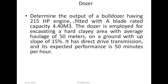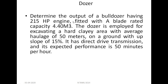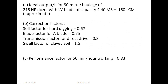Problem: Determine the output of a bulldozer with blade capacity 4.40 cubic meters. The dozer is employed for excavating a hard clay area with an average haul of 50 meters on ground with an absolute 15% grade. It has direct drive transmission and its expected performance is 50 minutes per hour. All correction factors are provided in the problem.